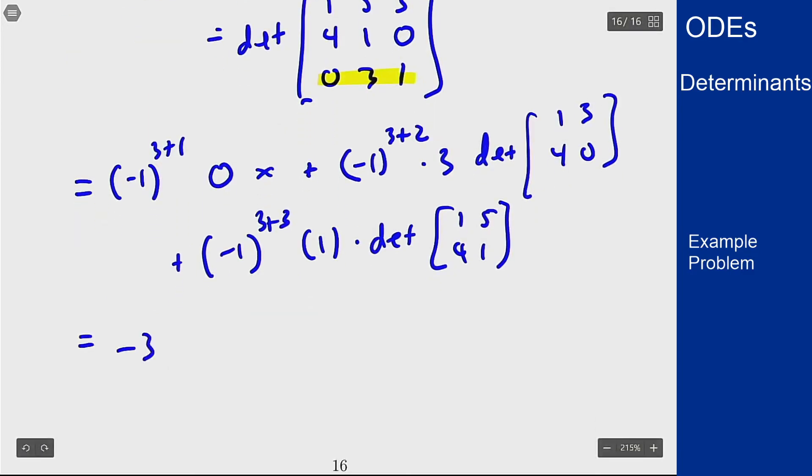So negative 3 times that 2 by 2 determinant, which will be 1 times 0 minus 4 times 3—diagonal minus off diagonal—and then plus negative 1 to the 6, which is 1, times 1, times that determinant, which is going to be 1 times 1 minus 5 times 4.